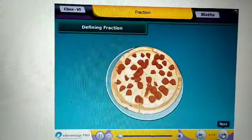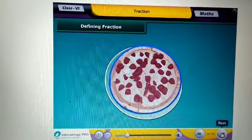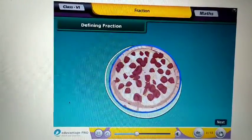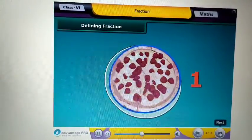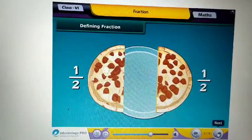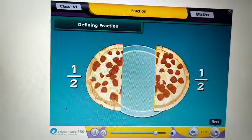Fraction indicates part of a whole thing. One upon two means that one whole thing is divided into two equal parts and one part out of these two parts is taken.